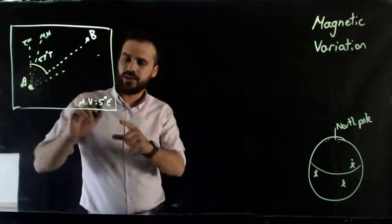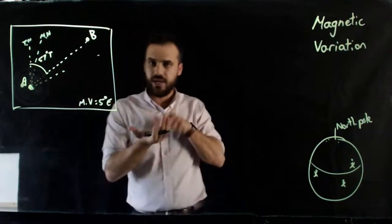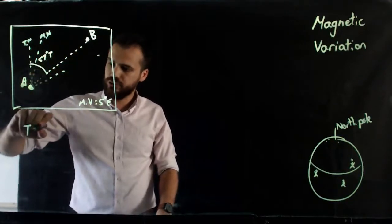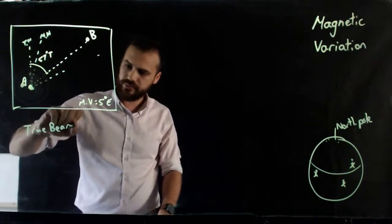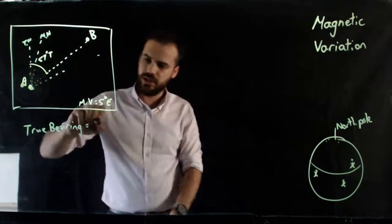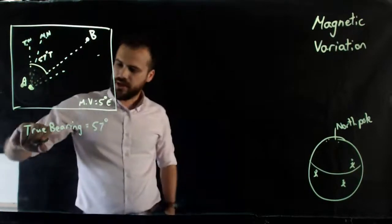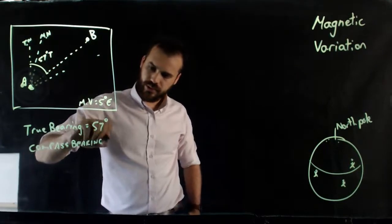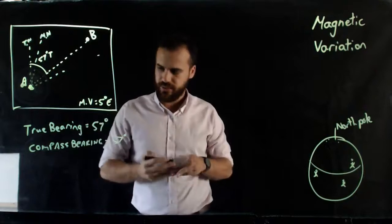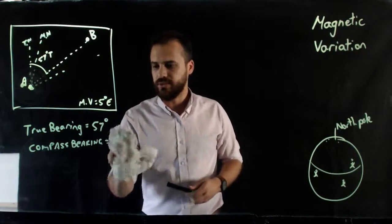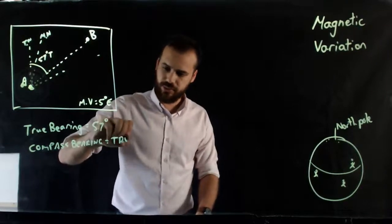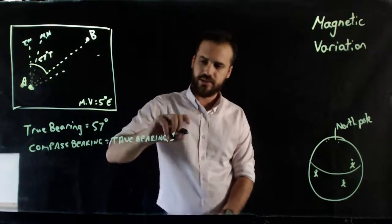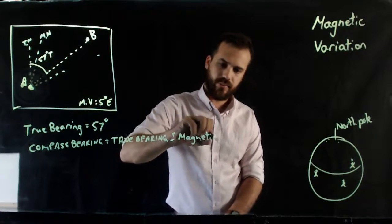So instead, what we're going to have to do is subtract 5 degrees from that. So we're going to have to say if the true bearing in this particular image is equal to 57 degrees, then the compass bearing is equal to 57 degrees. Let me get that right. Let's use a formula first. The compass bearing is equal to the true bearing plus or minus the magnetic variation.